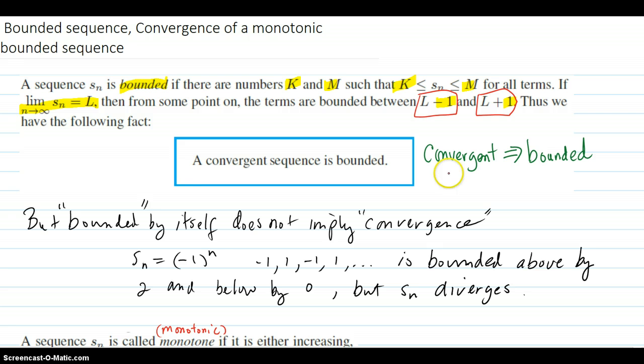So anytime you have a convergent sequence, it'll be bounded by just what the meaning of limit means. So convergent implies bounded.